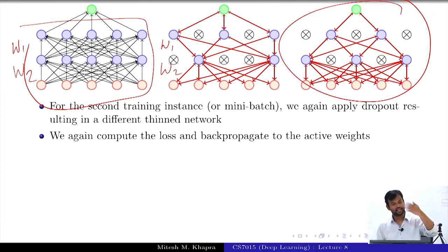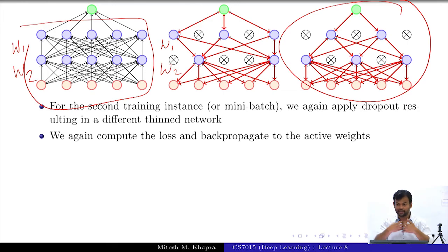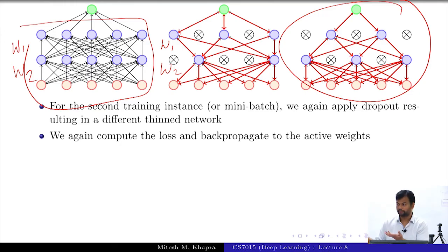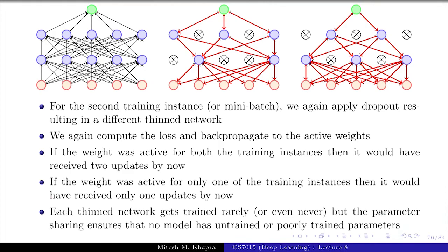This also connects to early stopping or L2 weight regularization — we are not allowing a single weight to continuously grow, because these weights will be off for some networks. Each thin network gets trained rarely, or sometimes even never, but its weights get updated through the other thin networks that share them.